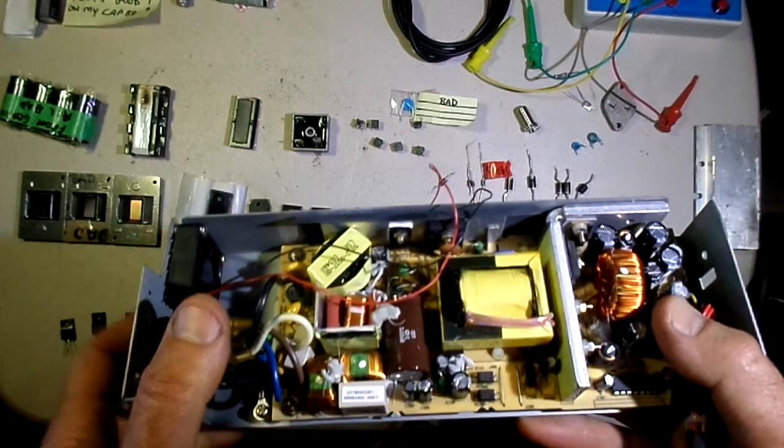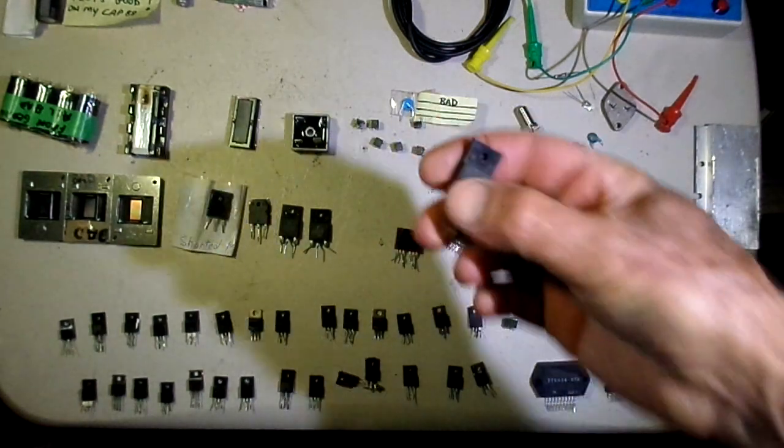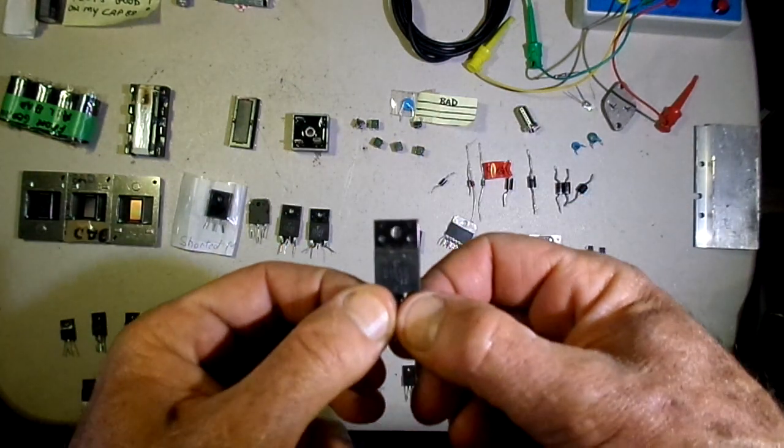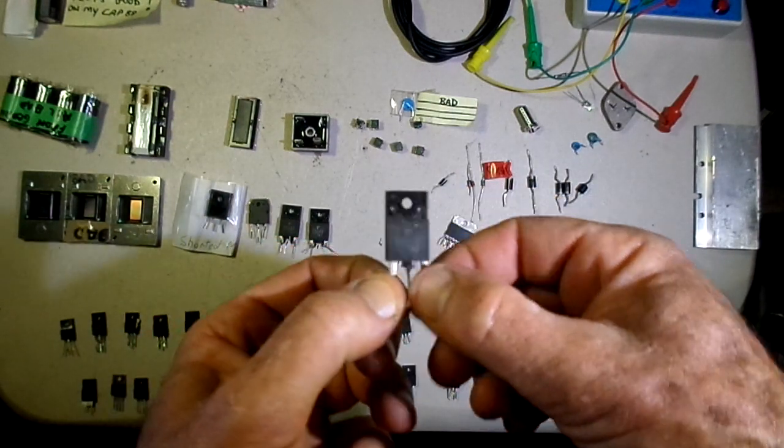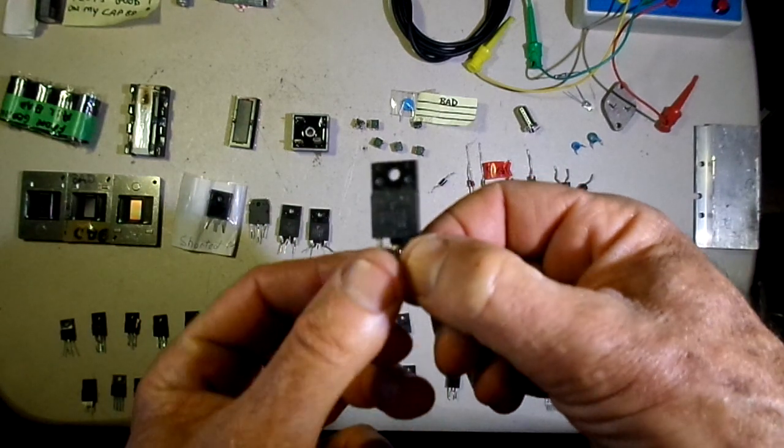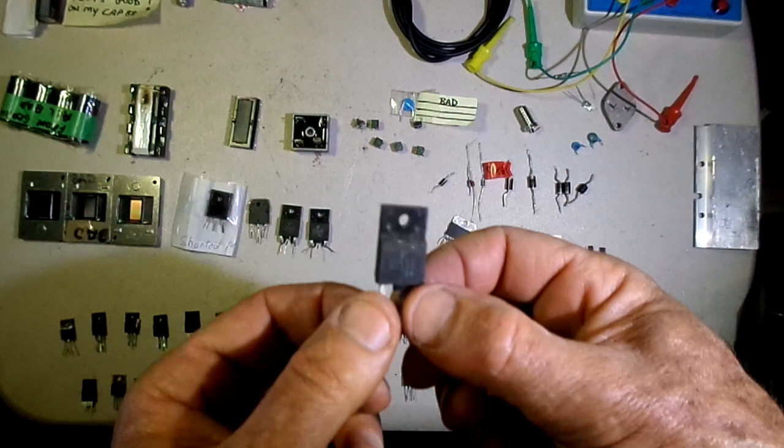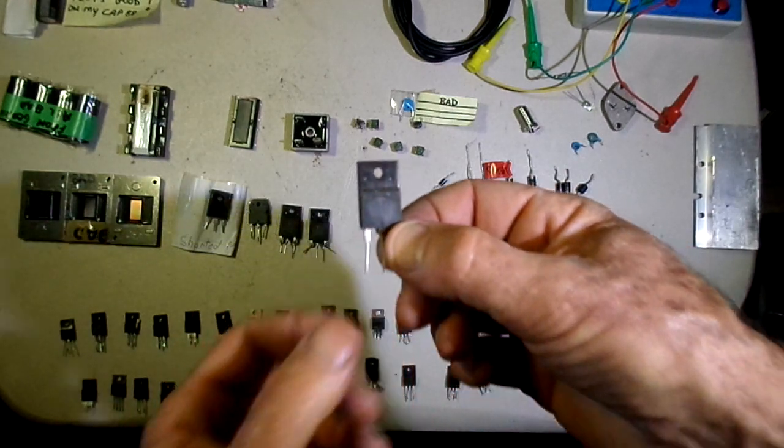The same is true with the older style TVs that had horizontal output transistors. Anybody that was a TV repairman in the old days knew all about horizontal output transistors because they were such a moneymaker for us. These things would go bad all the time, and much like the power MOSFETs, they also would switch pulsed energy into the flyback transformer. Because they worked awful hard, they were often an item of high failure.